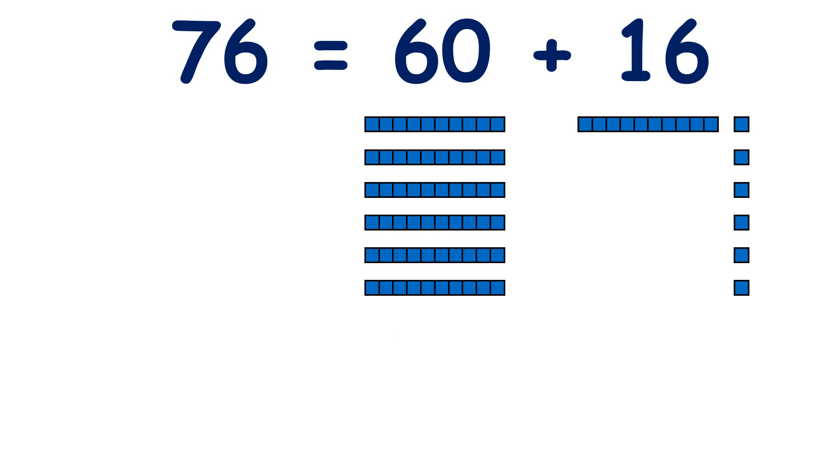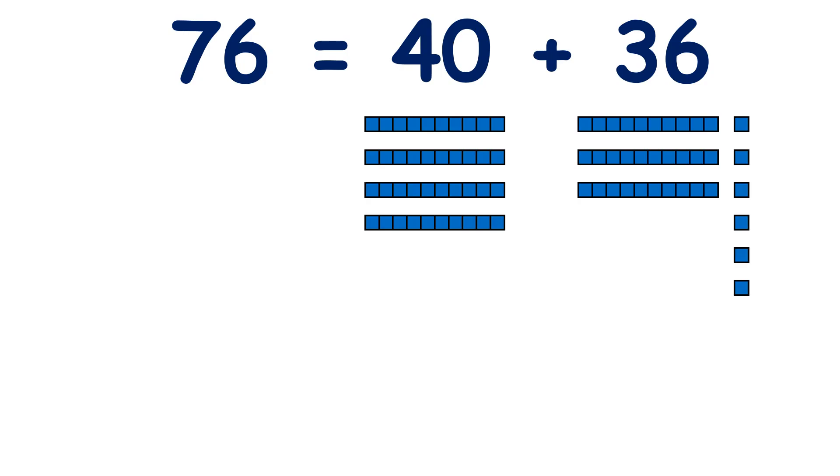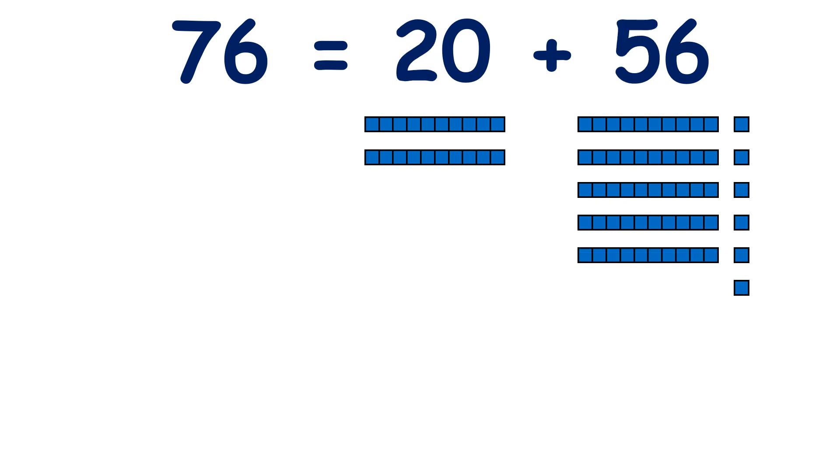We could have 60 and 16, so we still have seven tens and six units altogether. We could have 50 and 26, 40 and 36, so you can probably spot a pattern here, 30 and 46. And what do you think I'm going to do next? We could have 20 and 56, or 10 and 66.